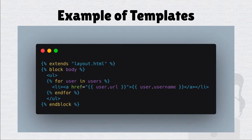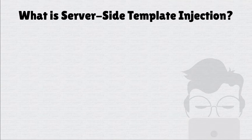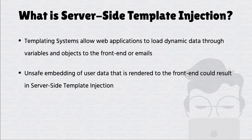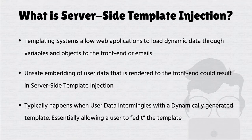Template systems are very popular. You would have probably seen something like this — emails with squiggly braces that are essentially template variables that need to be filled in, which have sometimes not been properly filled in. Templating systems are very, very popular. You see them on standard web pages, on email templates, all over the internet. A lot of them are rendered from the server side, which means you typically tend to have injection when user data intermingles with the server side and is executed like a server-side payload. So templating systems allow you to load dynamic data through variables and display that on the front end. Anytime you unsafely embed user data in a templating system and execute it on the server side, that's when you have server-side template injection — and this happens whenever user data intermingles with your dynamically generated template.